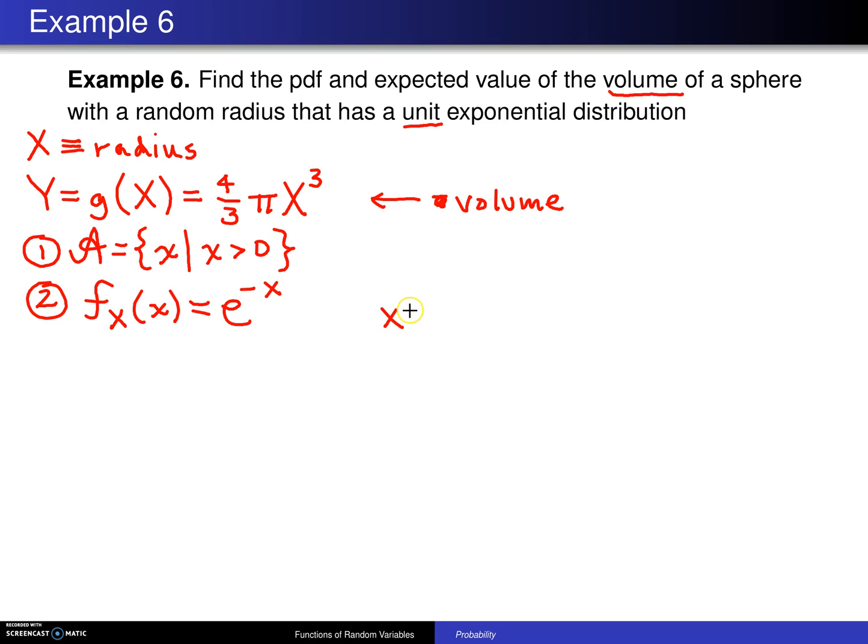That's the exponential distribution from back in chapter five, for x greater than zero. Step three will be to determine whether or not there is a one-to-one relationship between X and Y. If on the support x greater than zero you plot four thirds pi x cubed, that's going to look something like this. Here is x and here is y.